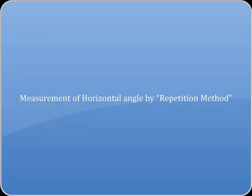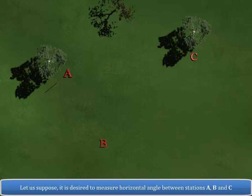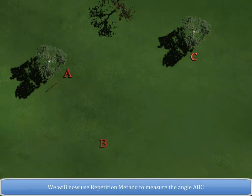Measurement of Horizontal Angle By Repetition Method. Let us suppose it is desired to measure horizontal angle between stations A, B and C. We will now use Repetition Method to measure the angle ABC.